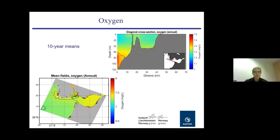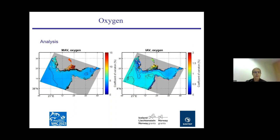For oxygen, mean fields show values around 7 to 8 milligrams per liter at the surface, with a vertical distribution shown in section. The analysis shows that most of the variability is concentrated in the shallow areas, where there is lots of biological production but also lots of air-sea interaction. The maximum variability, both for mean annual and inter-annual, is concentrated in the lagoon area, with less variability towards the open ocean.